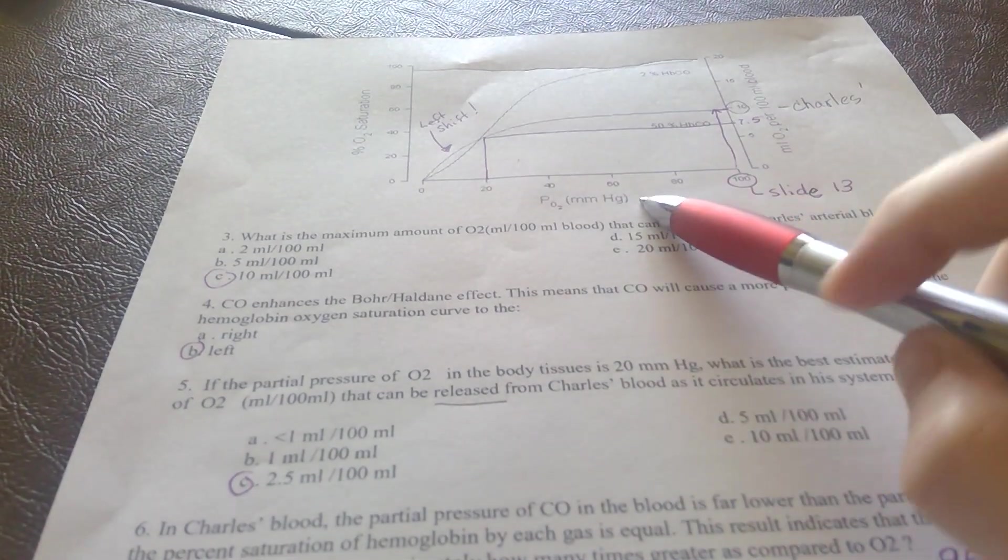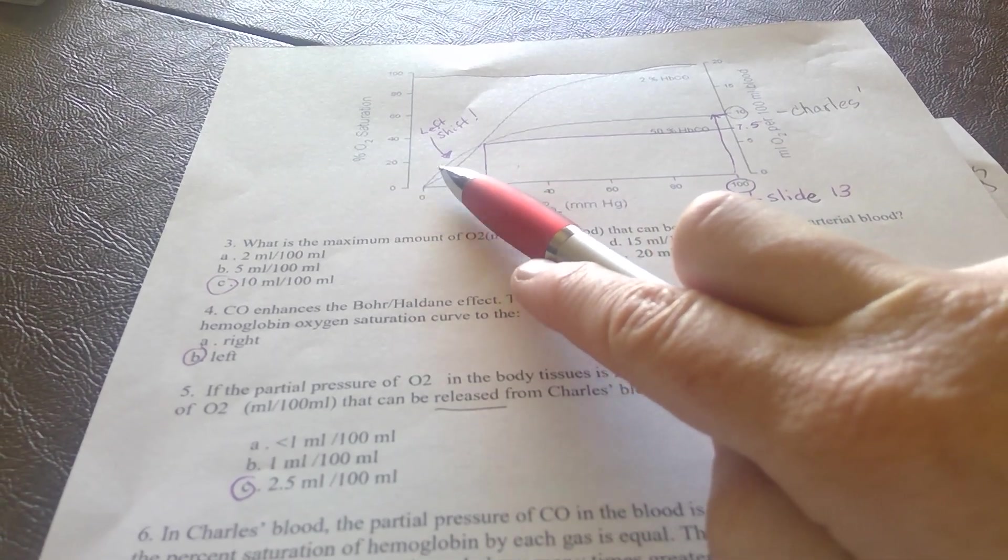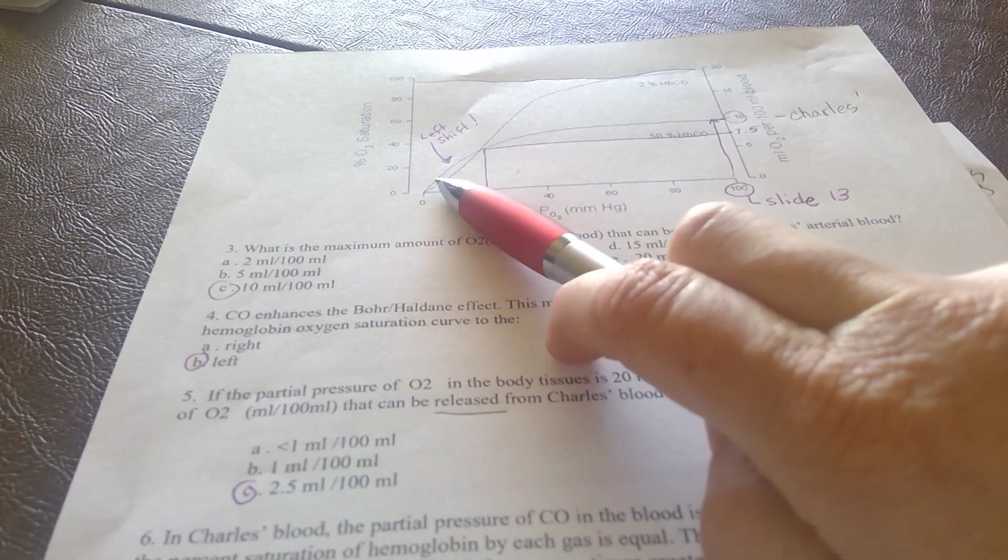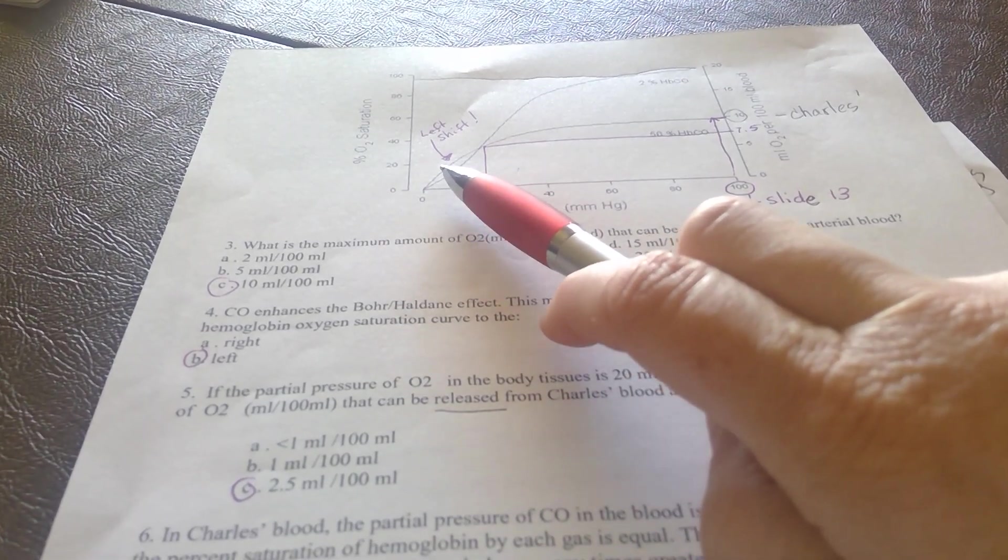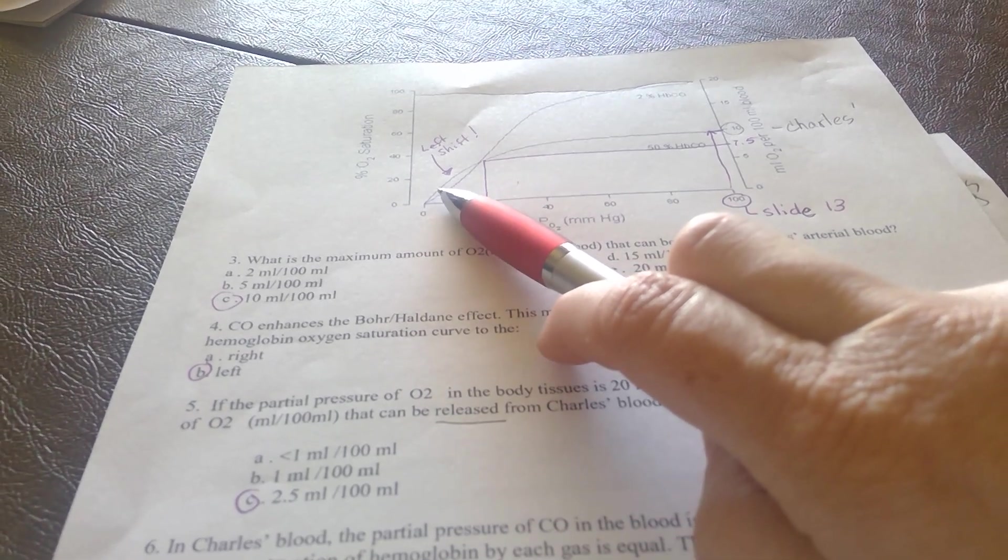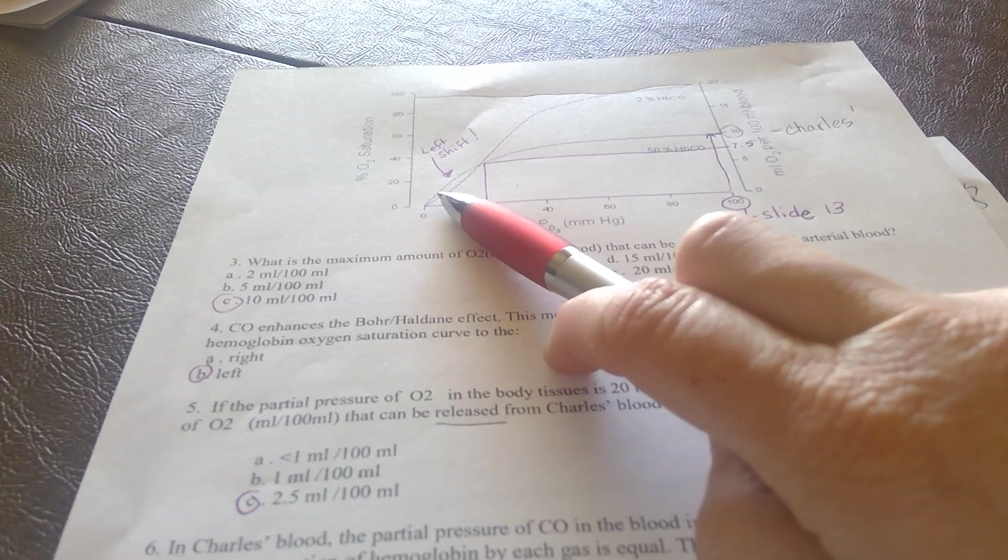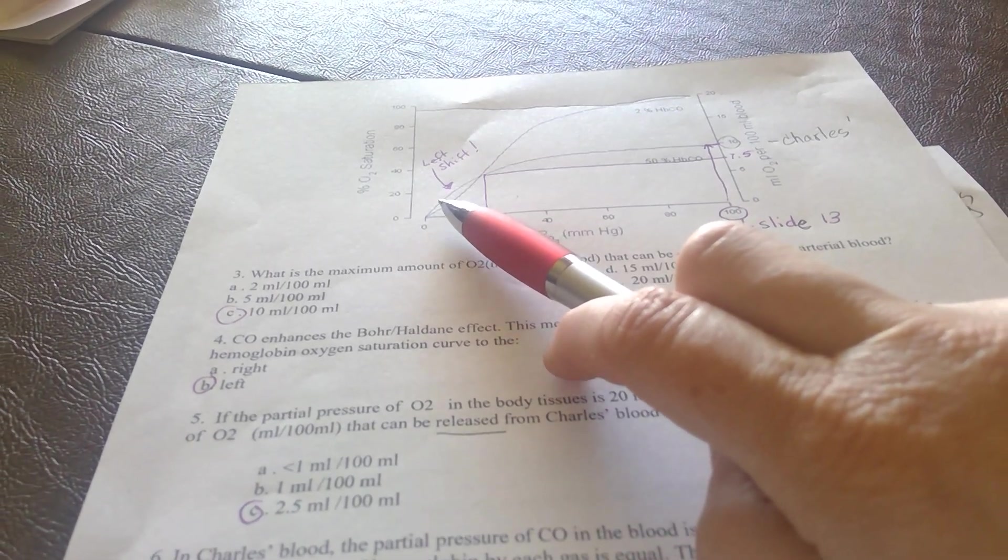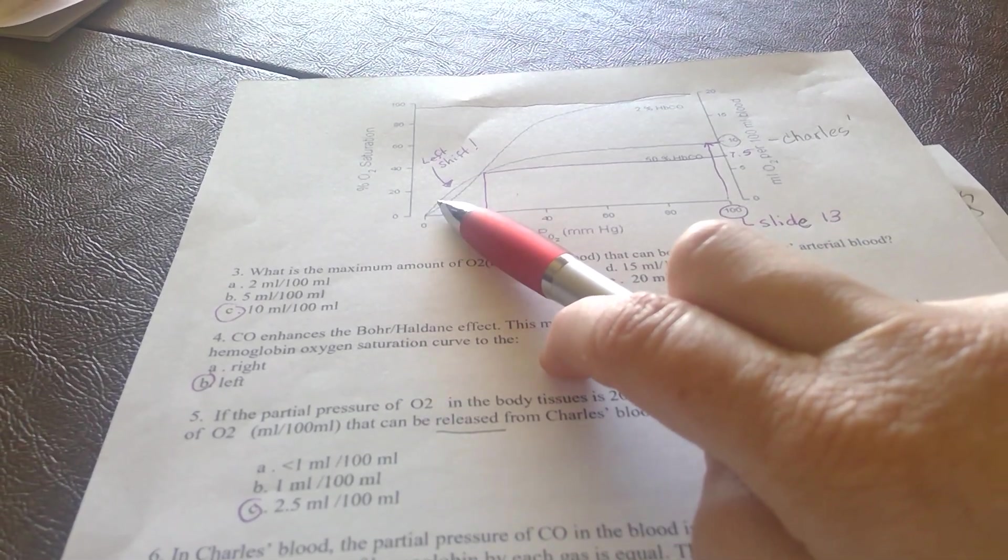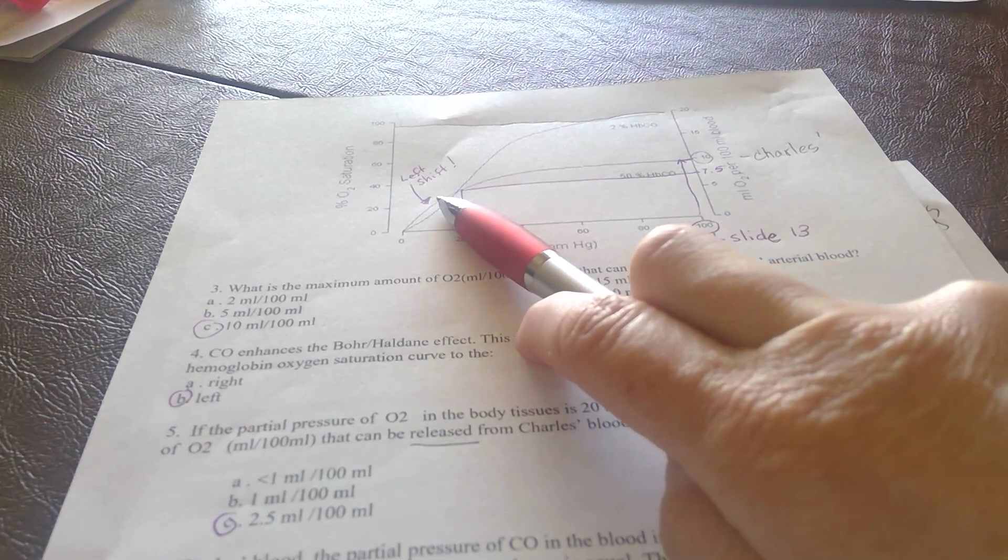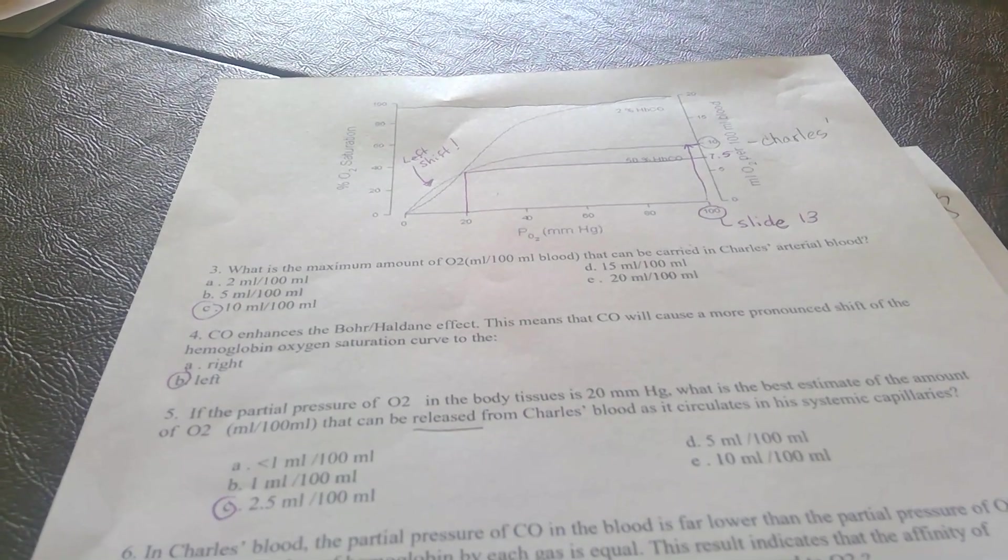In question four, I've already addressed this - Charles has a left shift. This reflects a hemoglobin that is more greedy, has higher affinity, is unwilling to let go of the remaining oxygen. Remember, he has 50% carbon monoxide poisoning. That means out of his four heme groups, he has only two that are loaded with oxygen, and the remaining two are being held onto with greater affinity, less likely to let go.